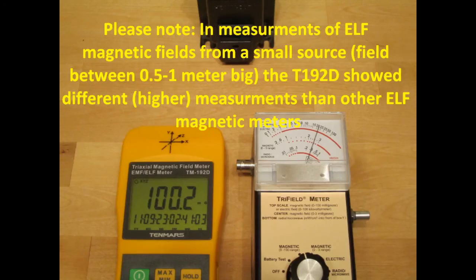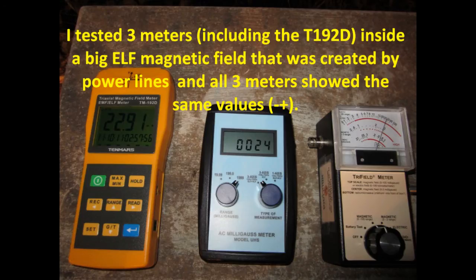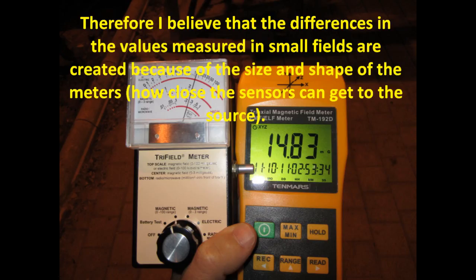Please note, in measurements of ELF magnetic fields from a small source, field between 0.5-1 meter big, the T192D showed different, higher measurements than other ELF magnetic meters. I tested 3 meters, including the T192D meter, inside a big ELF magnetic field that was created by a power line, and all 3 meters showed the same values. Therefore, I believe that the differences in the values measured in small fields are created because of the size and shape of the meter.